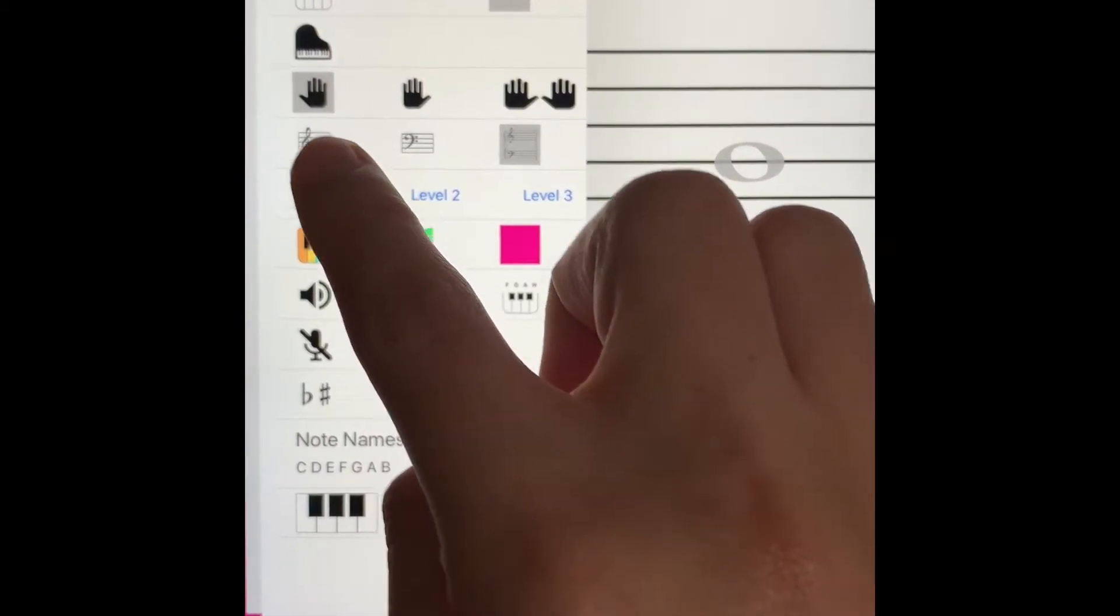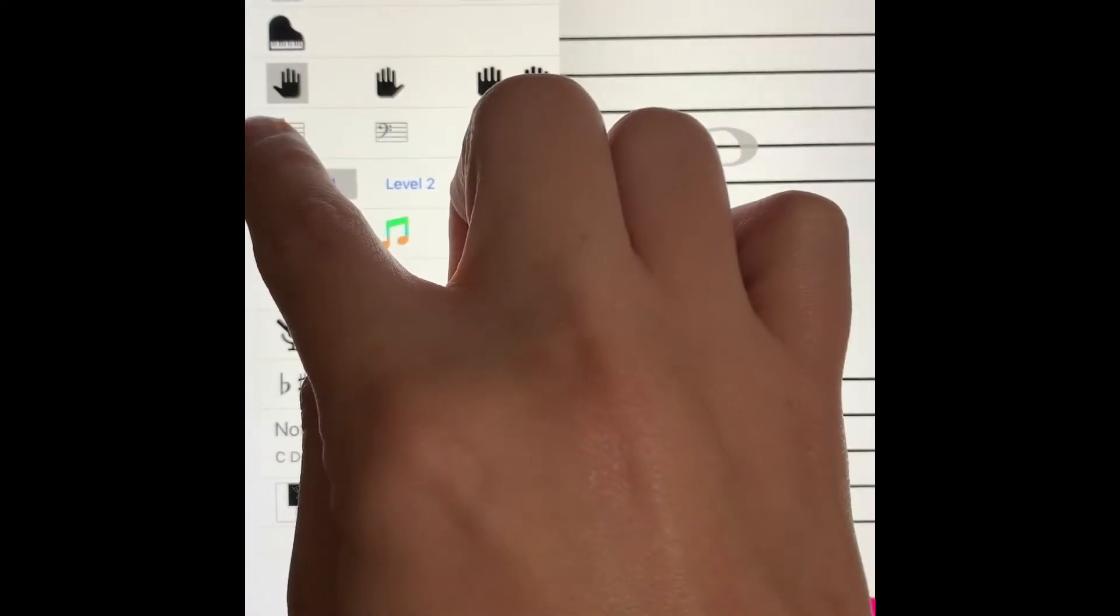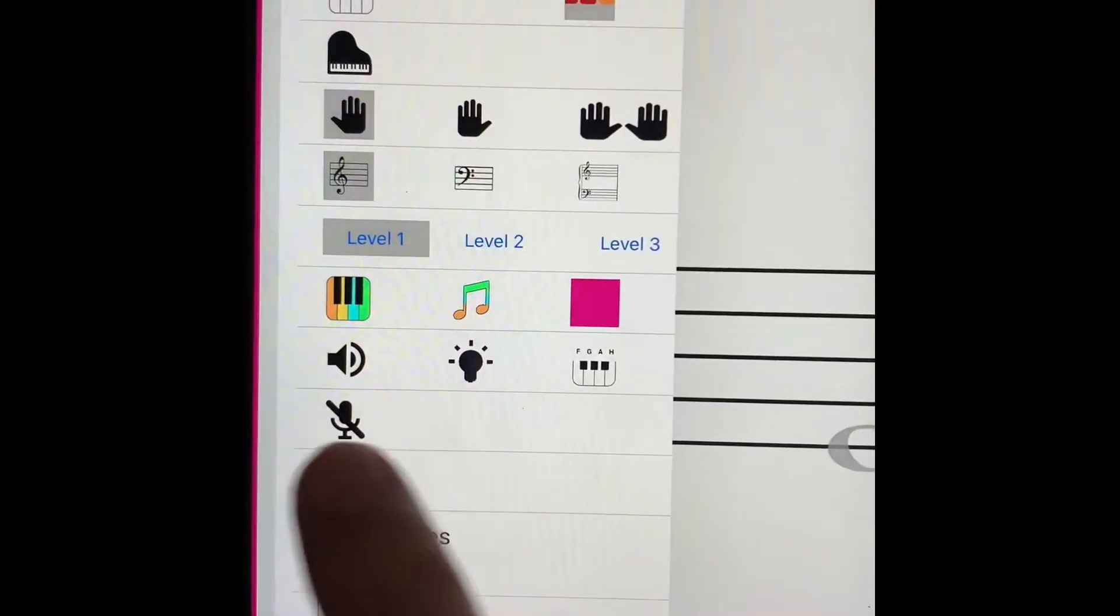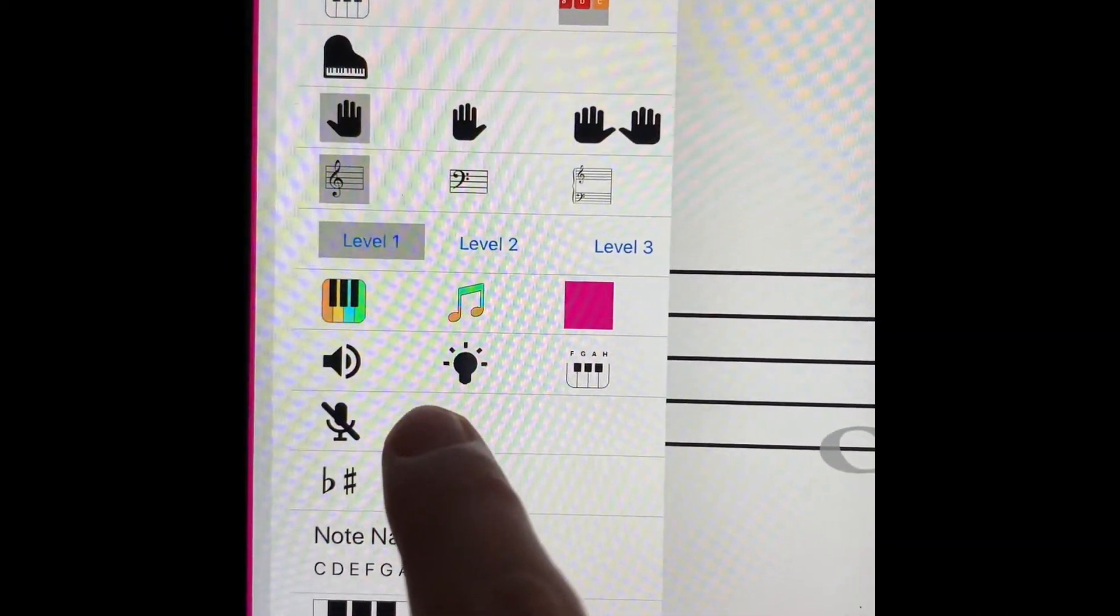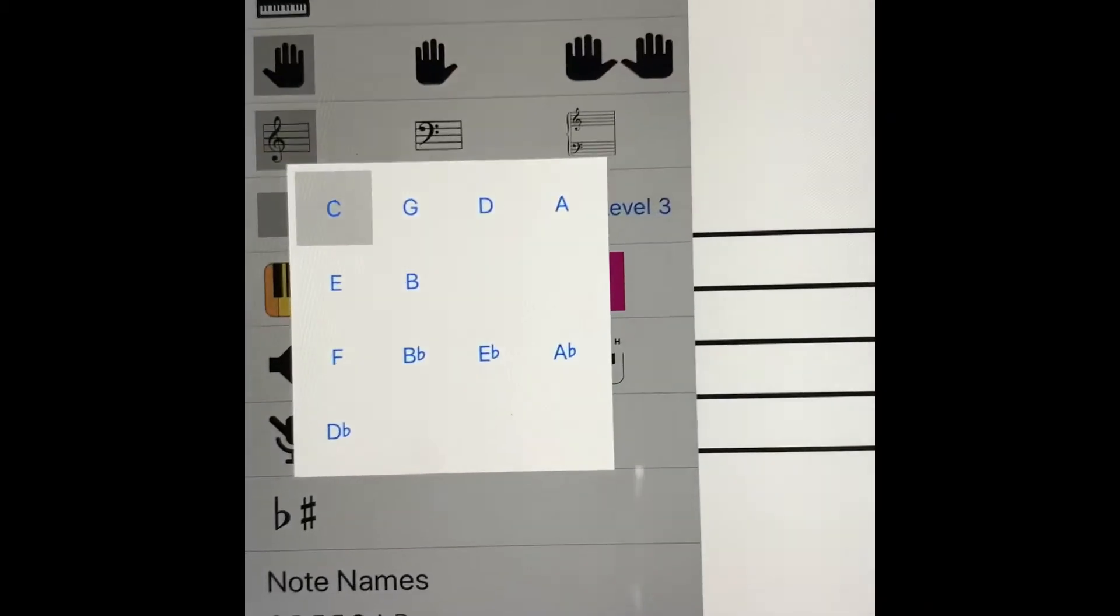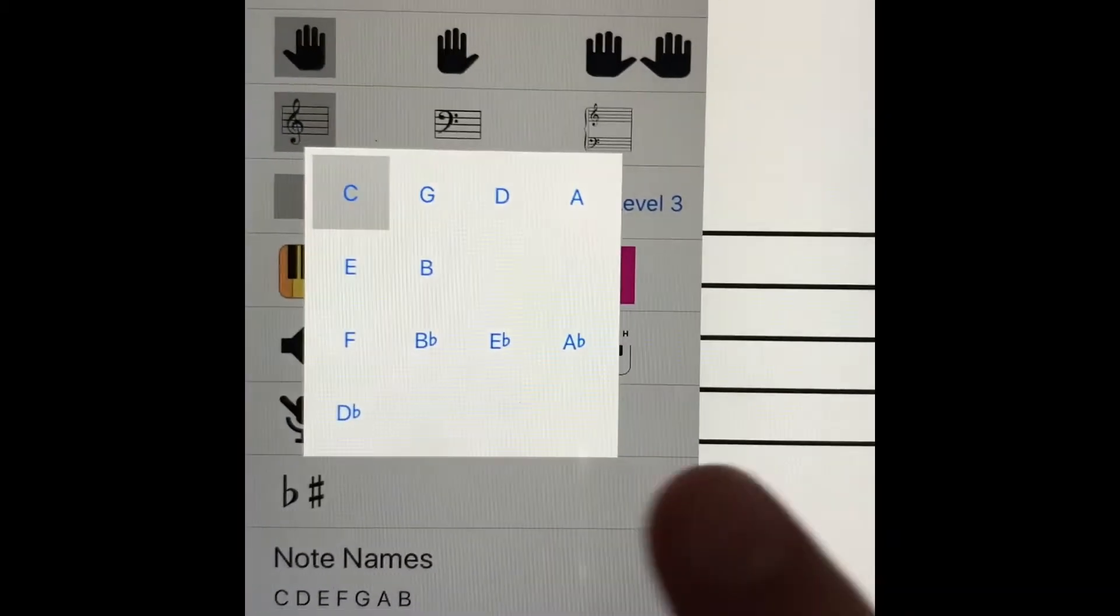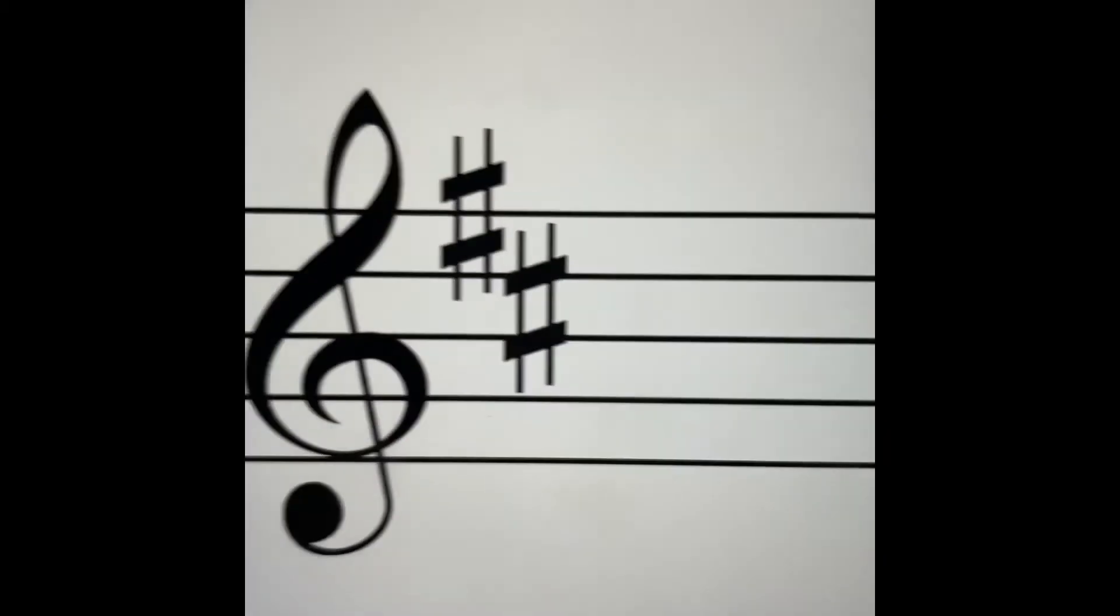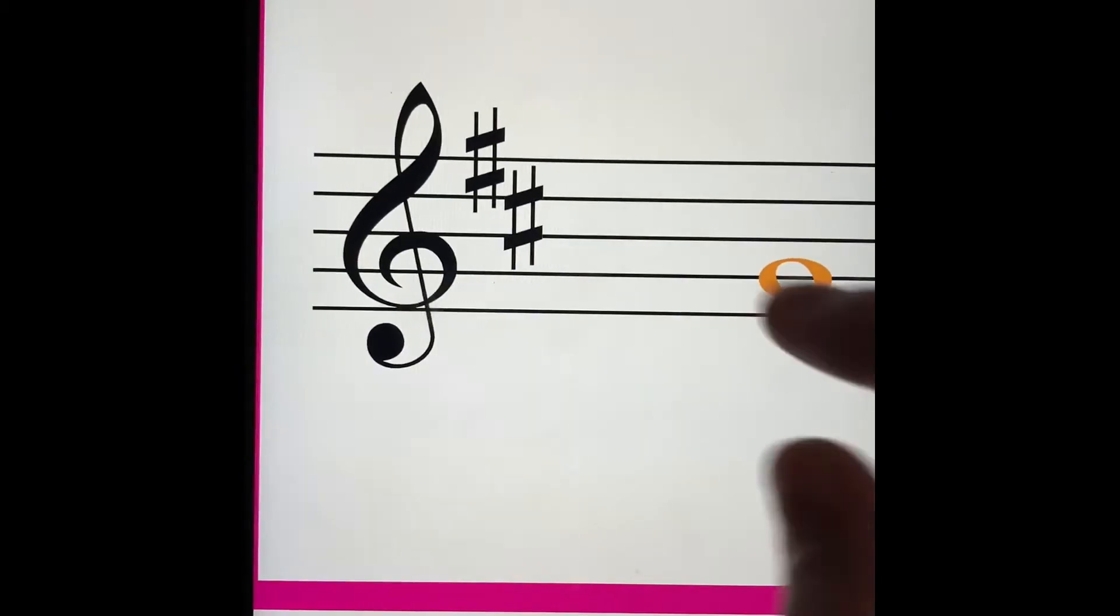Then you want to go to the treble clef right here and you want to go down and click Flats and Sharps. This is going to be for your key signatures. We want to go to D for D major, okay? And that way it'll look like this. That's your first step.